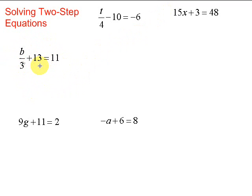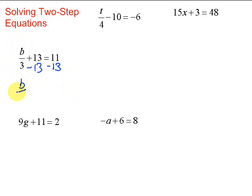In this case we have a plus 13. To get rid of plus 13 we do the opposite, just like always when solving — we subtract 13. If we do something on one side of the equation we must do it on the other side, so we subtract 13 here as well. Then we bring down what we have left: b over 3. The plus 13 and the minus 13 cancel out, and 11 minus 13 gives us negative 2.